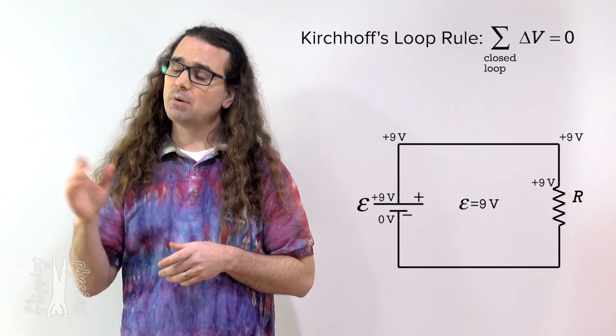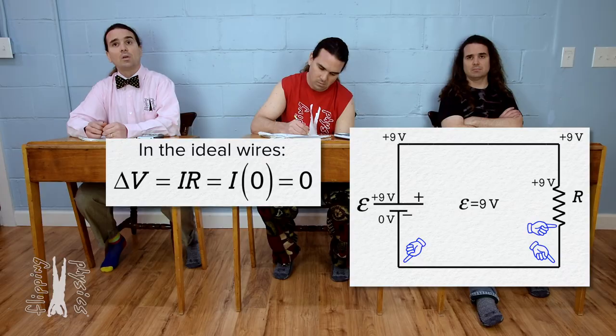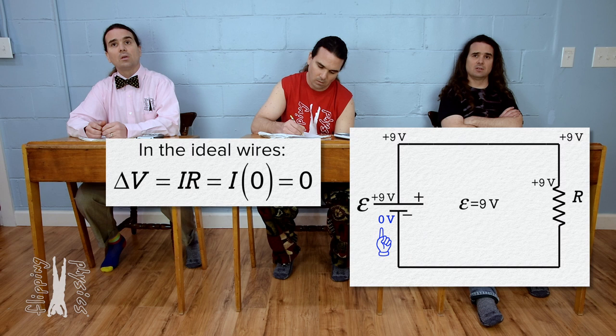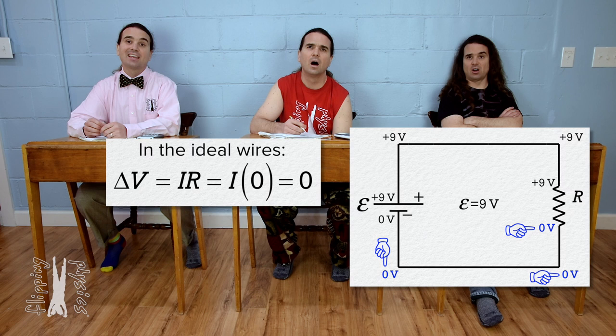Please do the same thing with the bottom half of the circuit. We decided the negative terminal of the battery is at zero volts. The wire all the way from the battery to the resistor has zero resistance, so the electric potential does not change at all. The electric potential is zero in all those places — both bottom corners and at the bottom of the resistor. Correct.